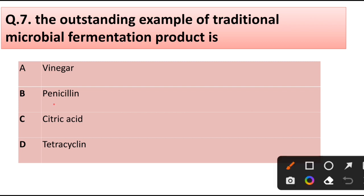Question number 7. The outstanding example of traditional microbial fermentation product is: vinegar, penicillin, citric acid, or tetracycline. Correct answer is option B, penicillin.